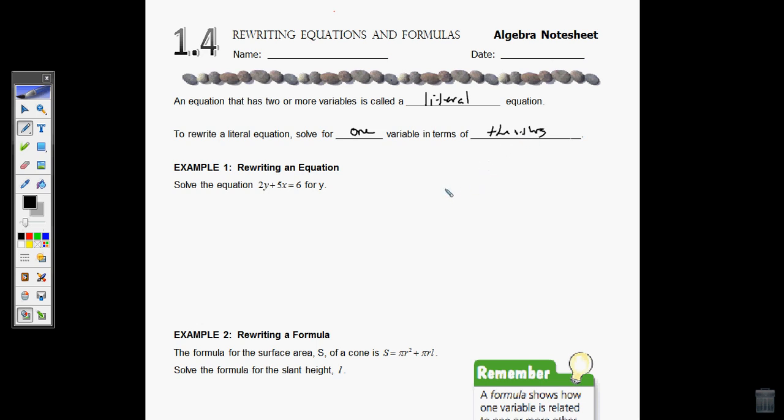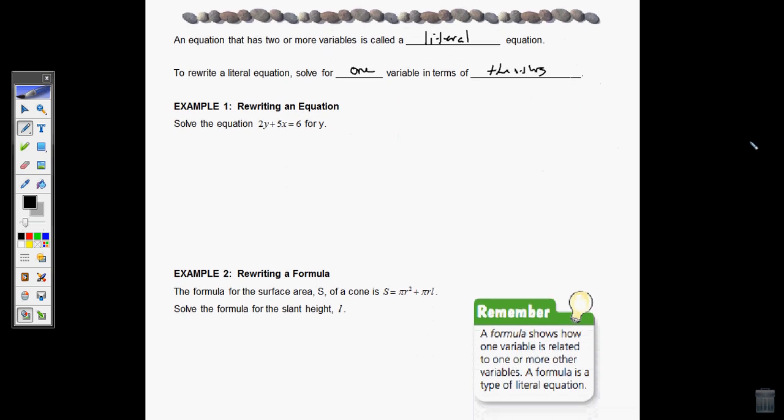Example one. This is where we get into some really good algebra and manipulation. When you're not using numbers so much, and you're manipulating equations with variables, that's when you get some really cool patterns in math. I want to take this equation right here and solve for Y, which means I want Y to be all by itself, and I want everything else to be on the other side. So I want something that says Y equals and then some other gibberish.